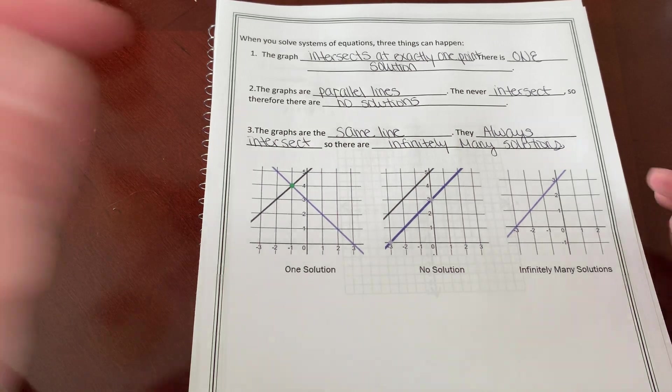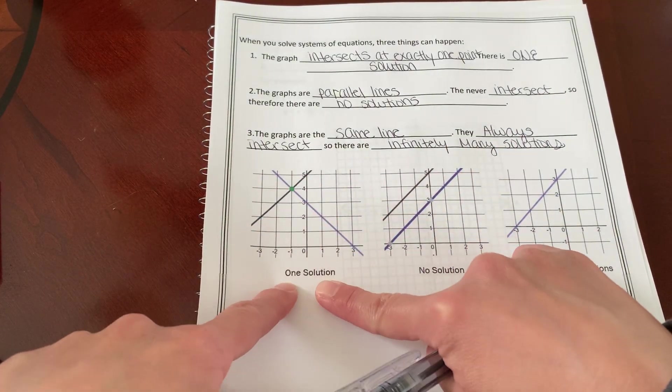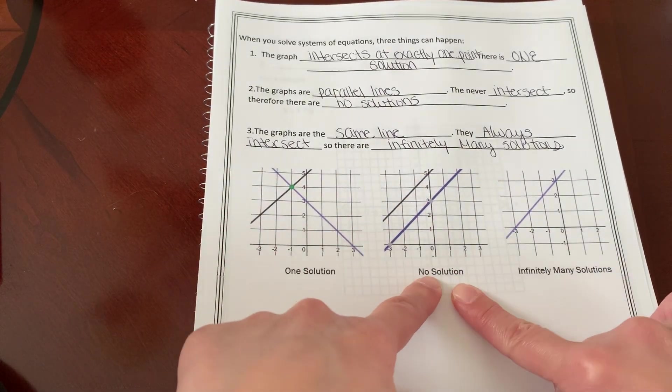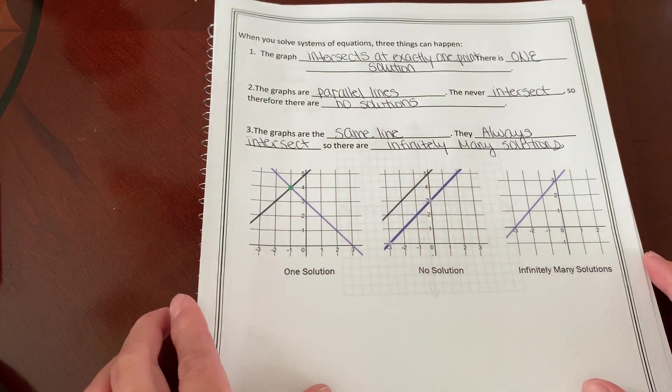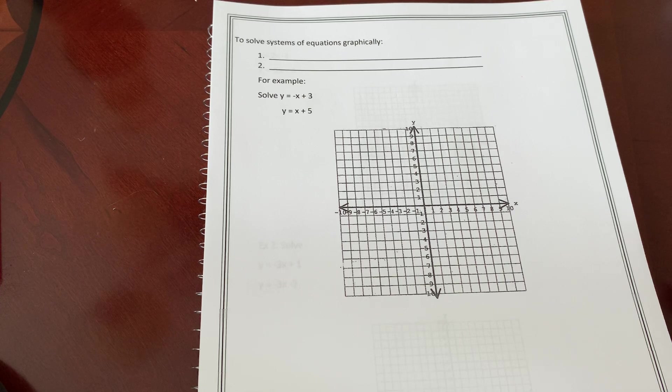So the three things that can happen are your two lines will intersect, which means there's one solution. Your two lines will never intersect. They are parallel lines, so there's no solution. Or they will be the same line and there will be many solutions. Okay, so let's do an example.